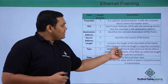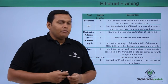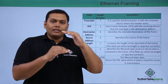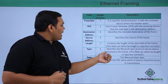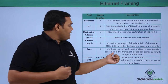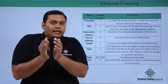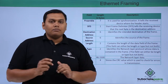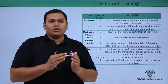The Length field contains the length of the data field of the frame. This field can either be length or type, but not both. The Type field identifies the network layer protocol whose data is contained in the frame. Again, this field can be either type or length, but not both.